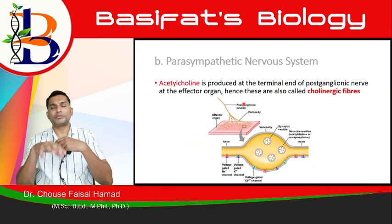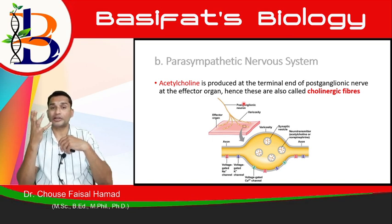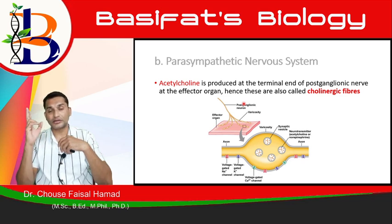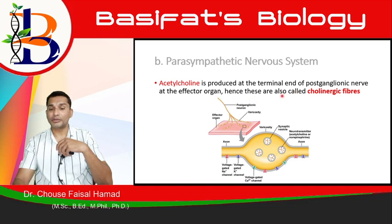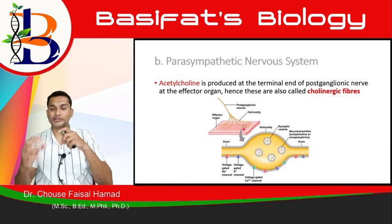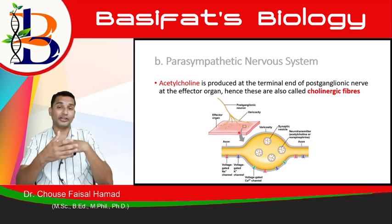In the sympathetic system, neurotransmitters like adrenaline and noradrenaline are secreted, activating the body during stress. In the parasympathetic system, the chemical secreted is acetylcholine, which carries the impulse. Acetylcholine is released at the synapse between neurons and at the effector organ. Because it releases choline, these fibers are called cholinergic fibers, as opposed to the adrenergic fibers of the sympathetic system.